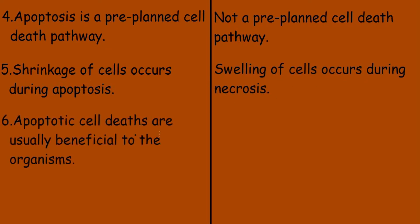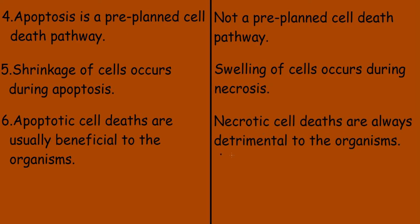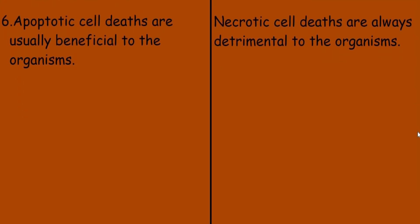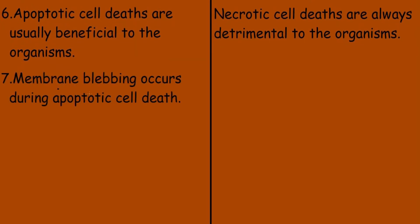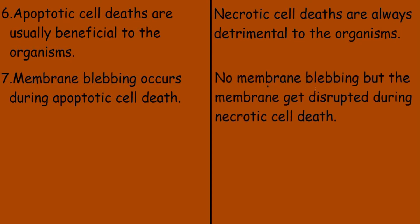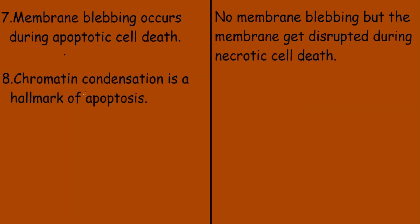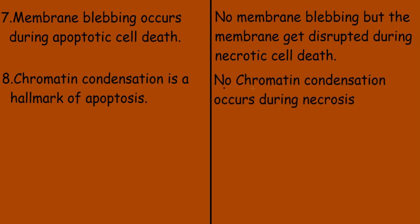Apoptotic cell deaths are usually beneficial to the organism, while necrotic cell deaths are always detrimental to the organism. Membrane blebbing occurs during apoptotic cell death, but no membrane blebbing occurs during necrosis — instead, the membrane gets disrupted. Chromatin condensation is a hallmark of apoptosis, while no chromatin condensation occurs during necrosis.